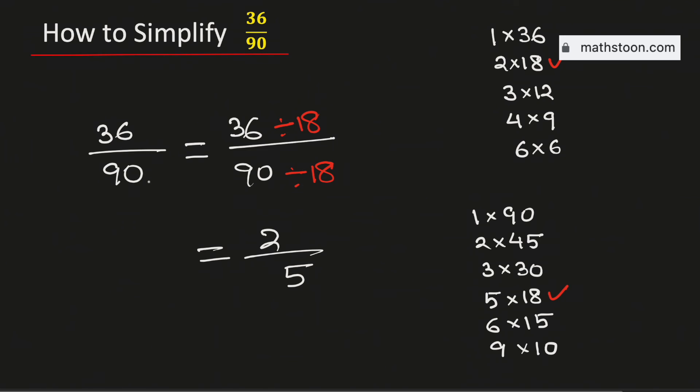So, the fraction 36 over 90 simplified is equal to 2 over 5. And it is its lowest terms. And this is our final answer.